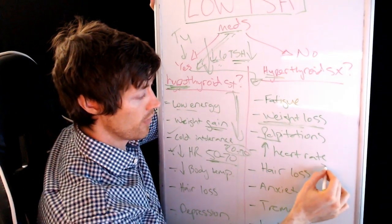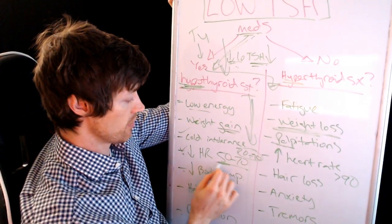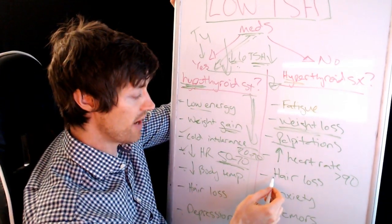You might have a rise in your heart rate. So people in this category may have a heart rate greater than 90 in the rested state. Remember, whereas if you had hypothyroidism, your heart rate was in the 50 to 70 range. You might have hair loss.